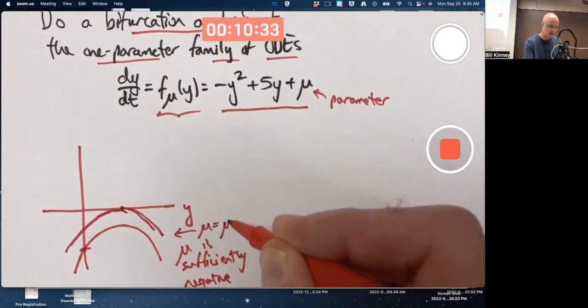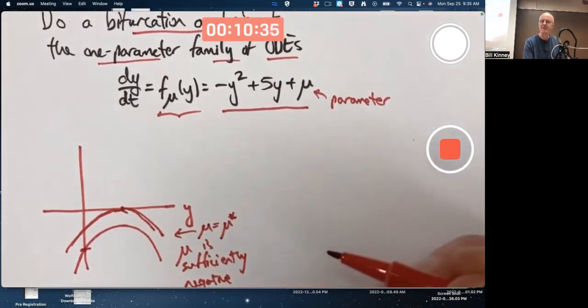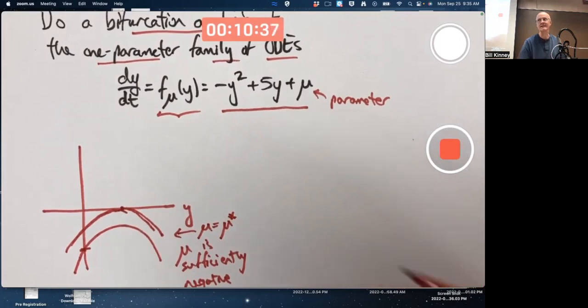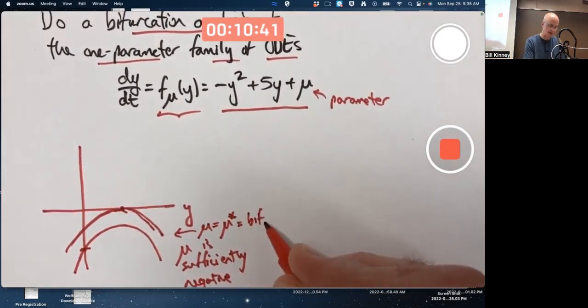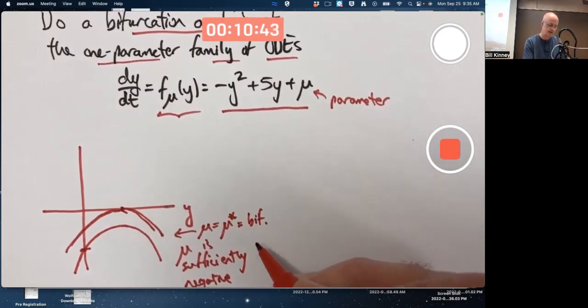Mu equals, say, mu star. Star means it's a special number. That's the bifurcation value, whatever it is. We have to figure it out with the quadratic formula in the end. That's the bifurcation value.